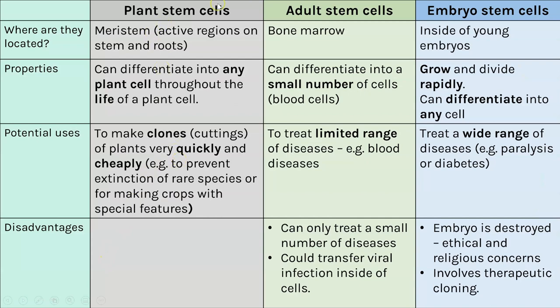Here's a summary of the three types of stem cells - you might want to pause and note this down. For plants, you could use stem cells to make clones or cuttings - a way of growing plants very quickly and cheaply. Instead of planting seeds and waiting, you can cut off a section of a plant and it will grow the new cells needed, such as roots, to make a new plant. This is really useful as a way to prevent the extinction of rare species or to create special crops.